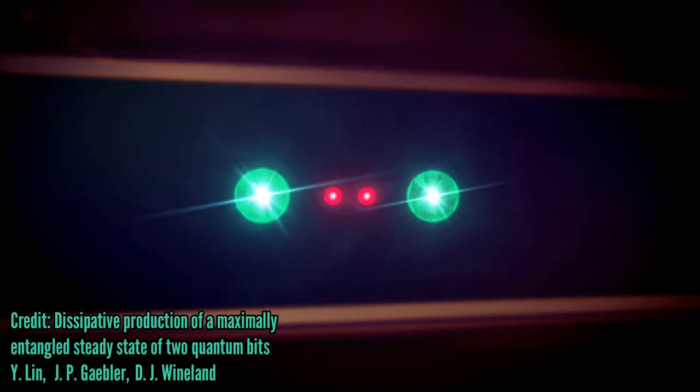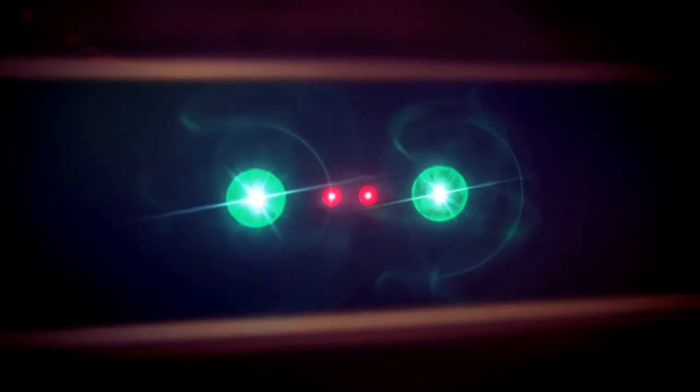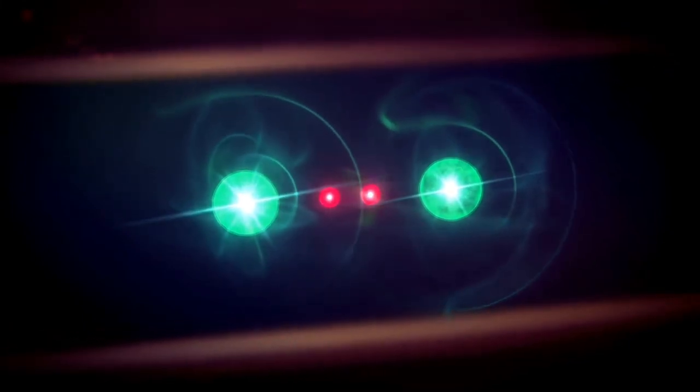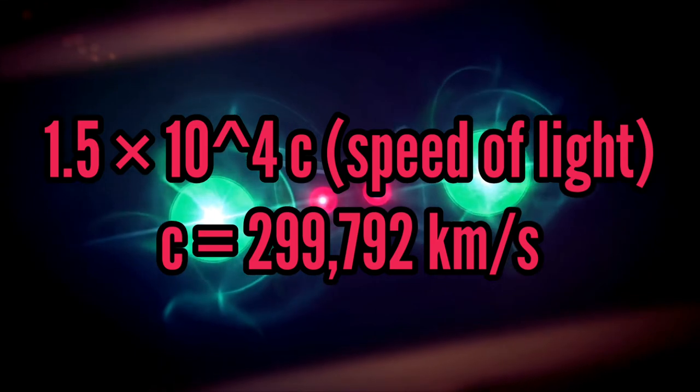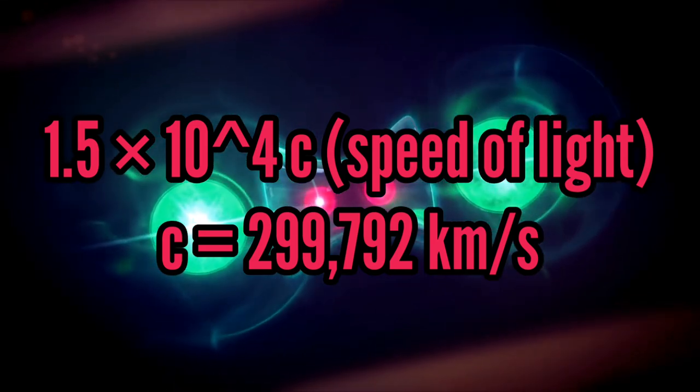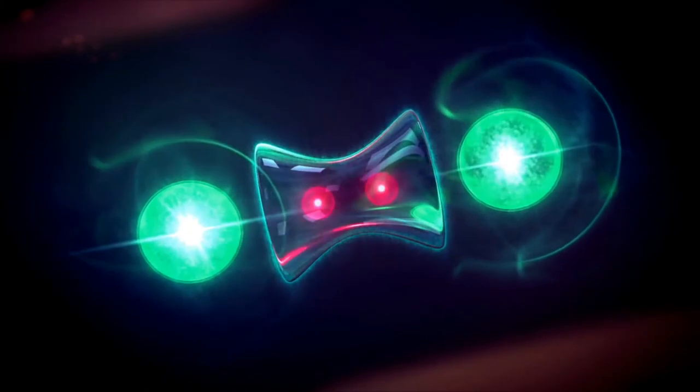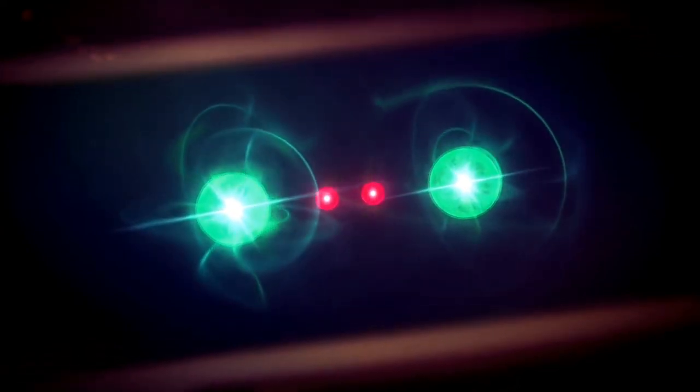The conservative bound that physicists obtain for the speed of quantum information in that frame are equal to 1.5 times 10 to the 4 C. It is quite impressive, but like most physicists, the present authors of the aforementioned paper will not be astonished if further experiments provide an even higher value.